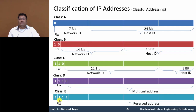In Class E, the first 4 bits of the first octet — 1, 1, 1, 1 — are fixed. The remaining bits are used for reserved addresses. In short, Class E is used for reserved addresses.